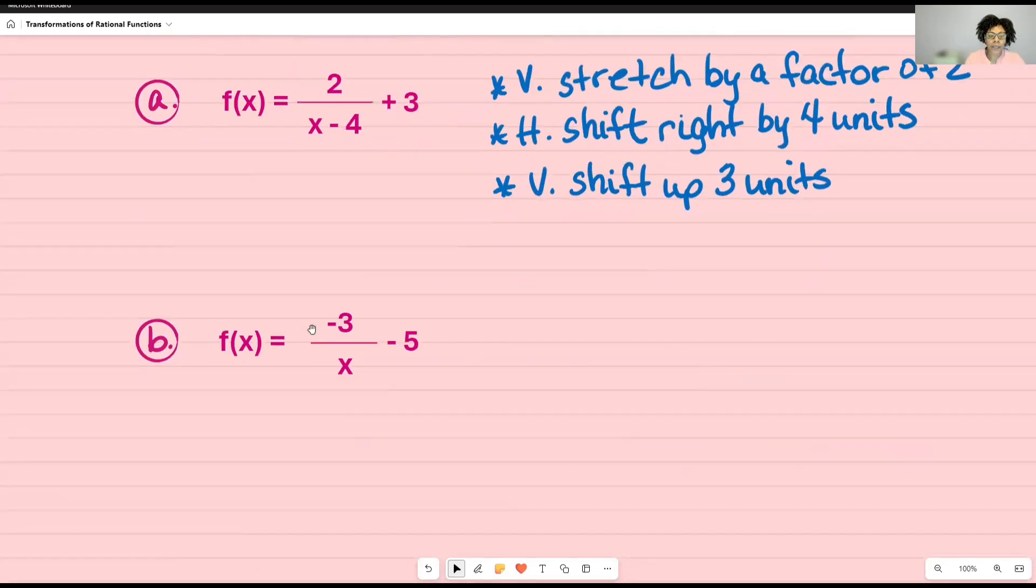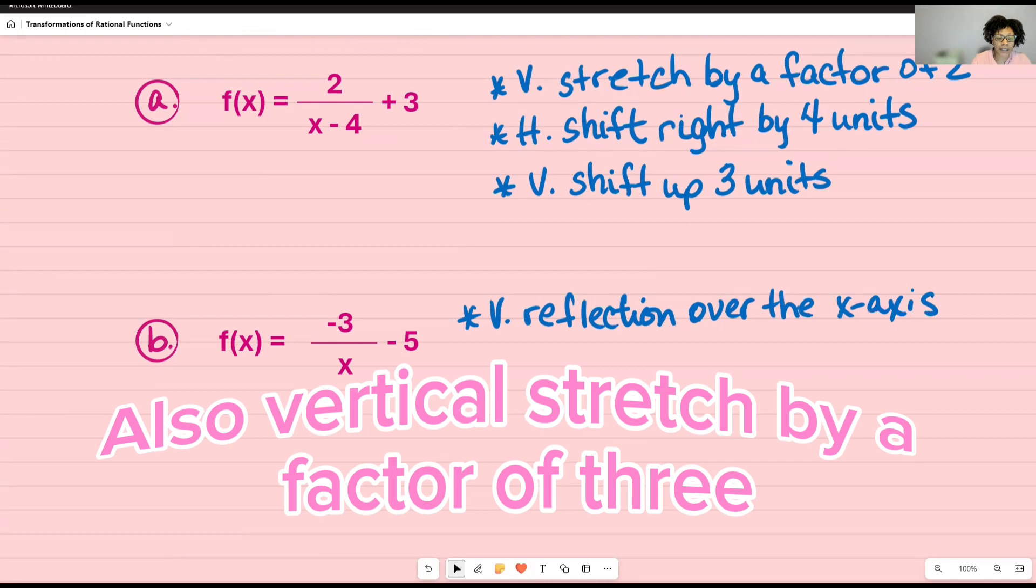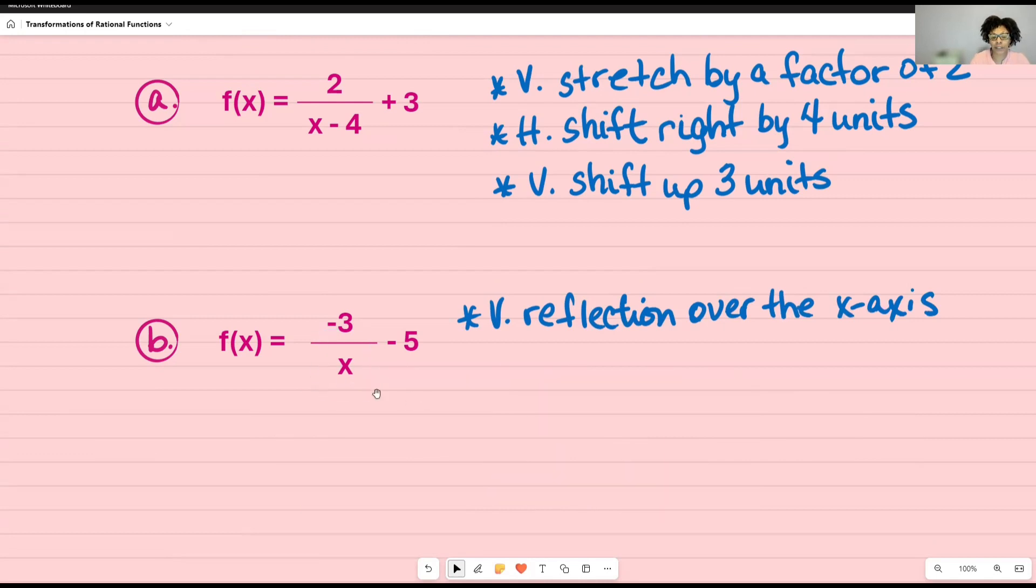And this is the last example. I have a negative this time. So that tells me I'm going to have a vertical reflection over the x-axis. Then at the bottom, I just simply have an x. So I wouldn't have any type of transformation. It didn't move left or right. And then the last transformation that I see is a negative 5. That tells me that I'm going to have a vertical shift or translation down this time because it's negative 5 units.